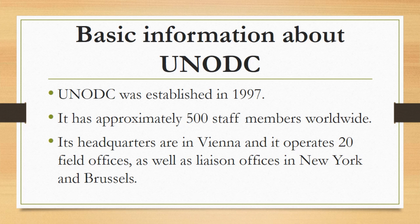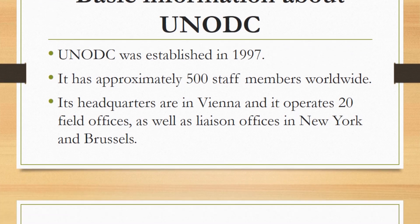UNODC was established in 1997. It has approximately 500 staff members worldwide. Its headquarters are in Vienna, and it operates 20 field offices as well as liaison offices in New York and Brussels. By working directly with governments and non-governmental organizations, UNODC field staff develop and implement drug control and crime prevention programs tailored to countries' particular needs.